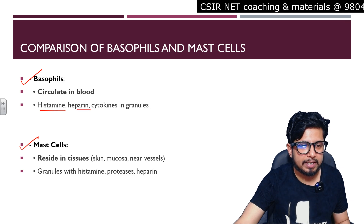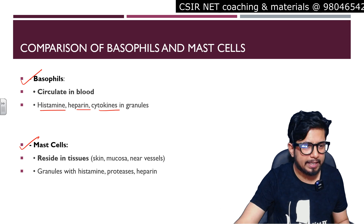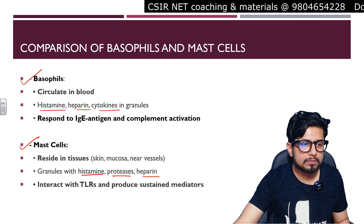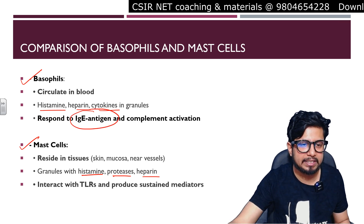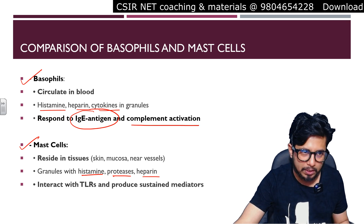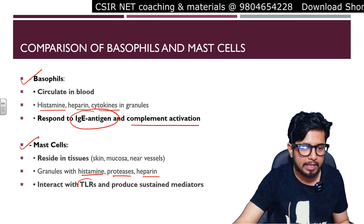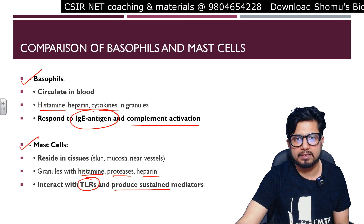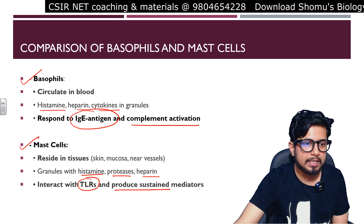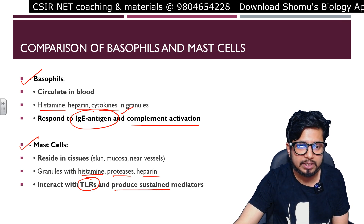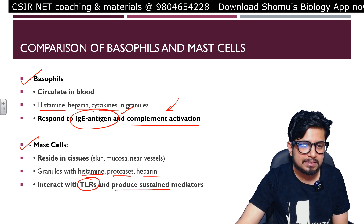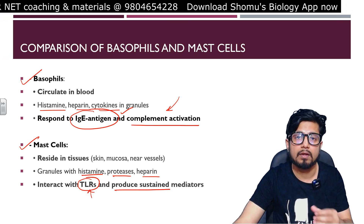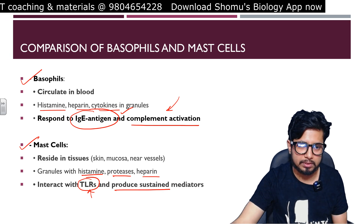Both release histamine, heparin, and cytokines in granule form. However, basophils respond to IgE antigen and complement activation in the bloodstream, while mast cells interact with toll-like receptors — part of the pattern recognition receptors for pathogens — to produce sustained mediators in the tissue.